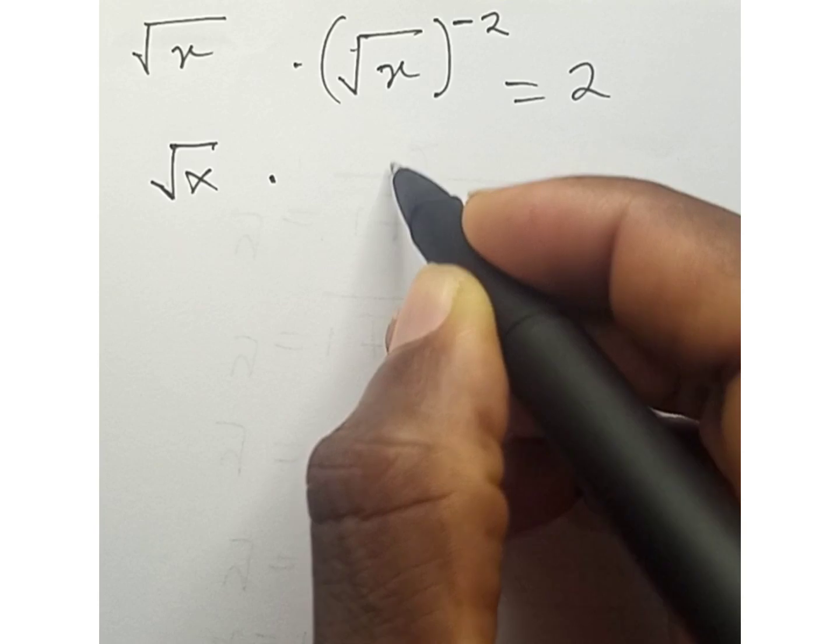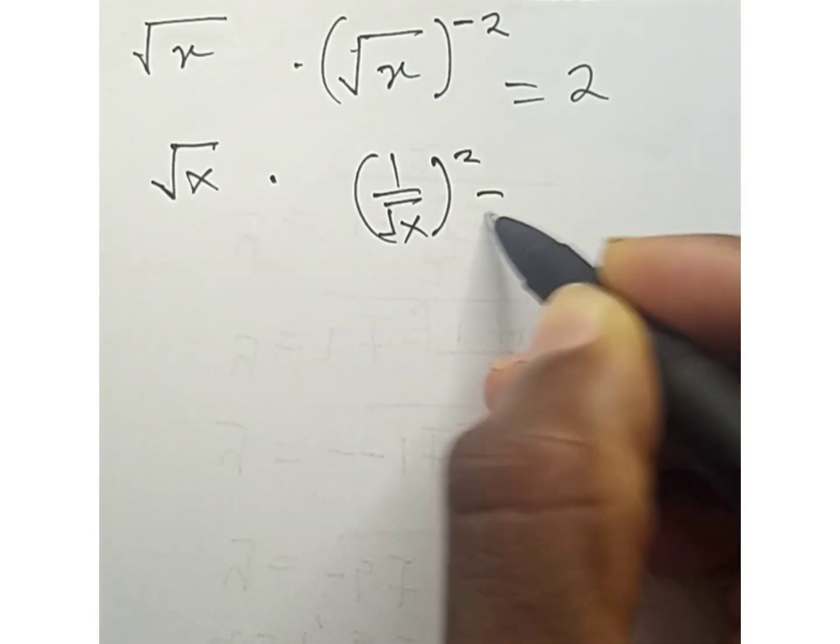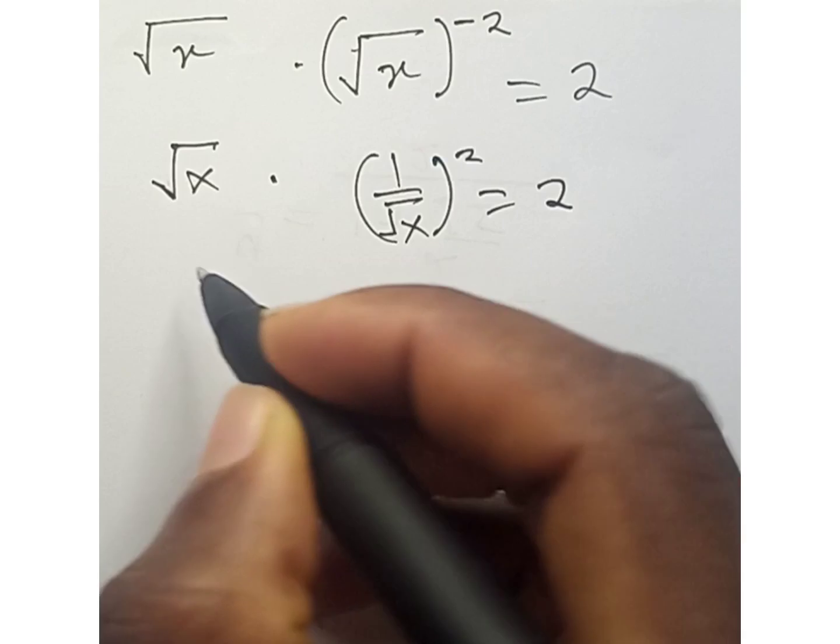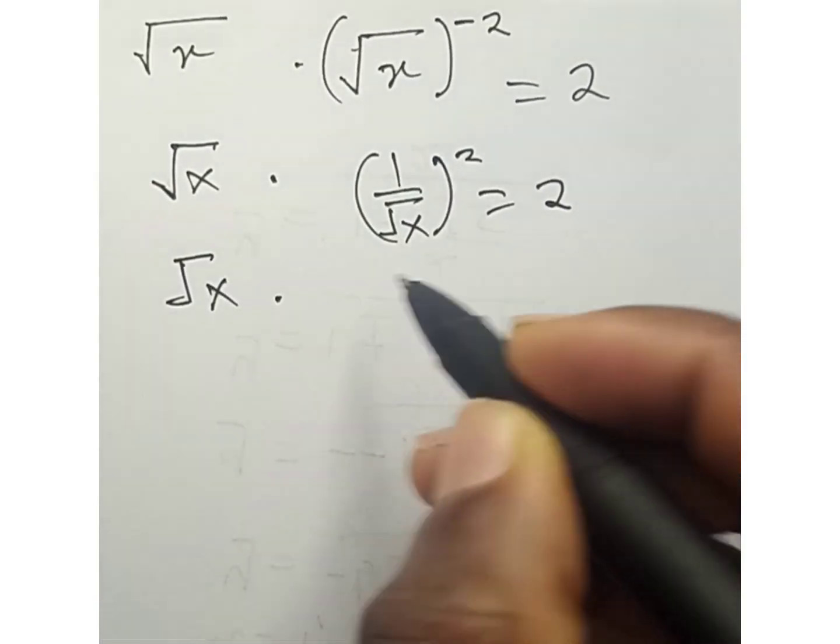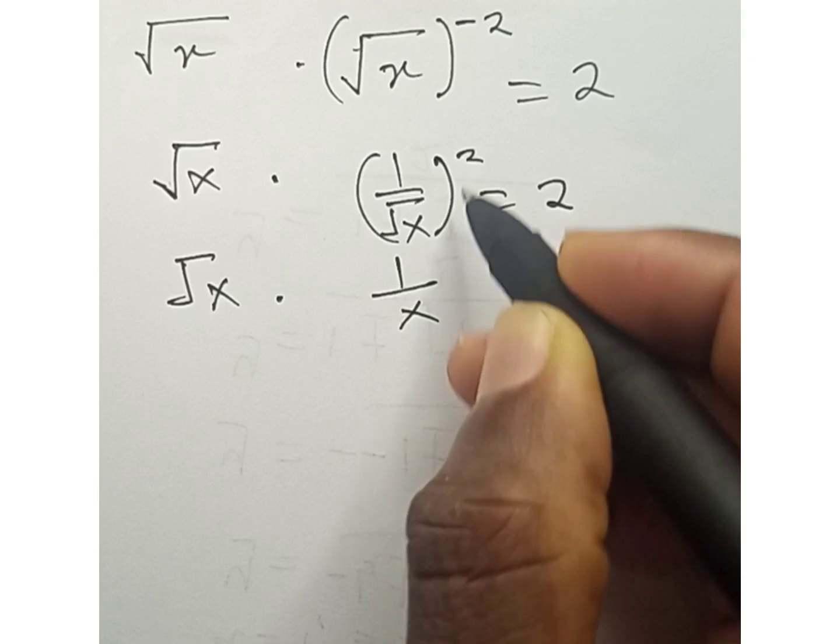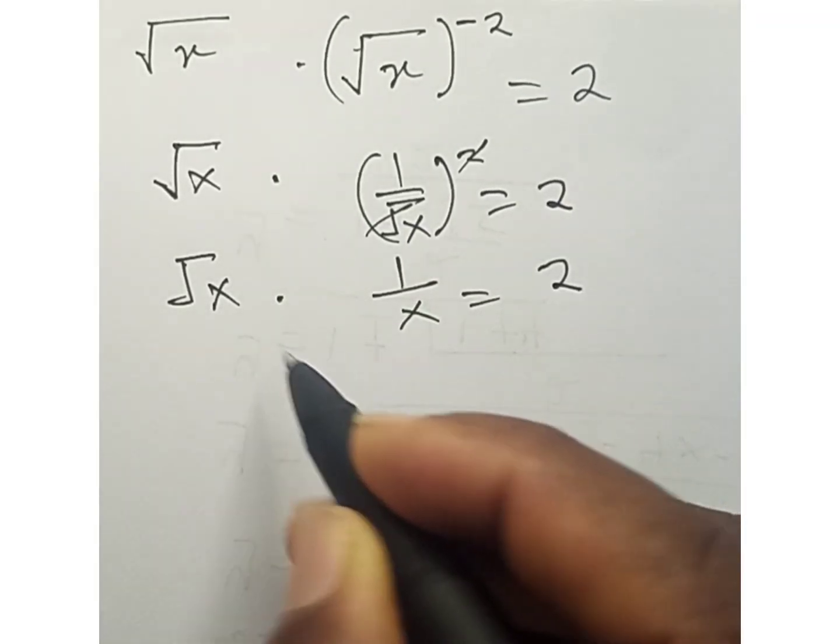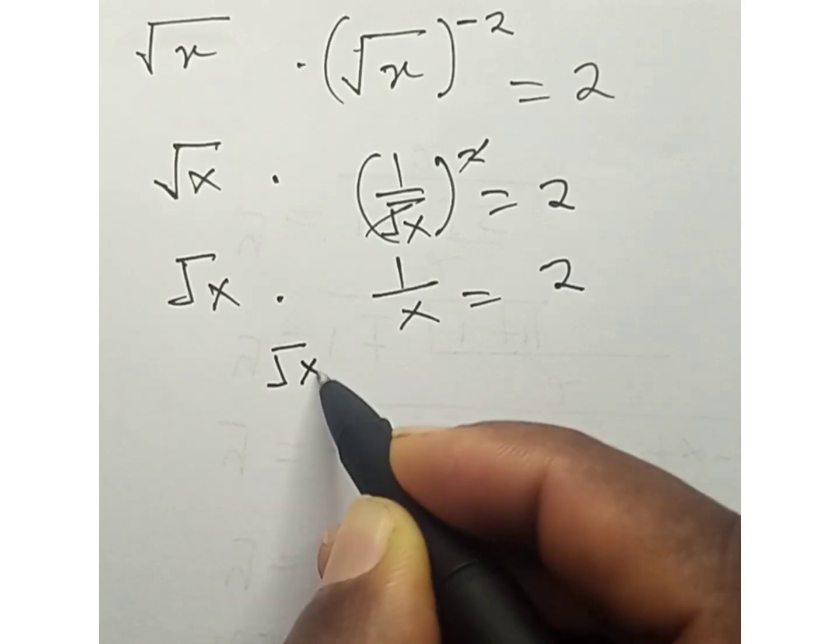times we translate this one: 1 over √x all square equals to 2. So we're going to have √x times 1 over x, this will go with this equals to 2. So we're going to have √x